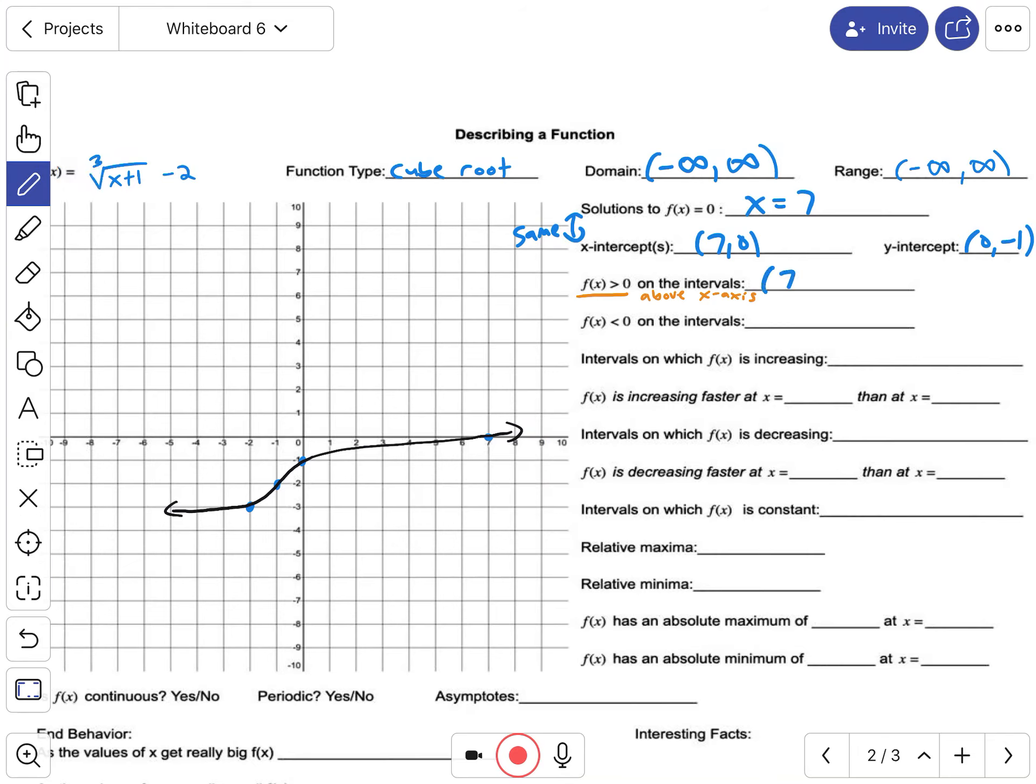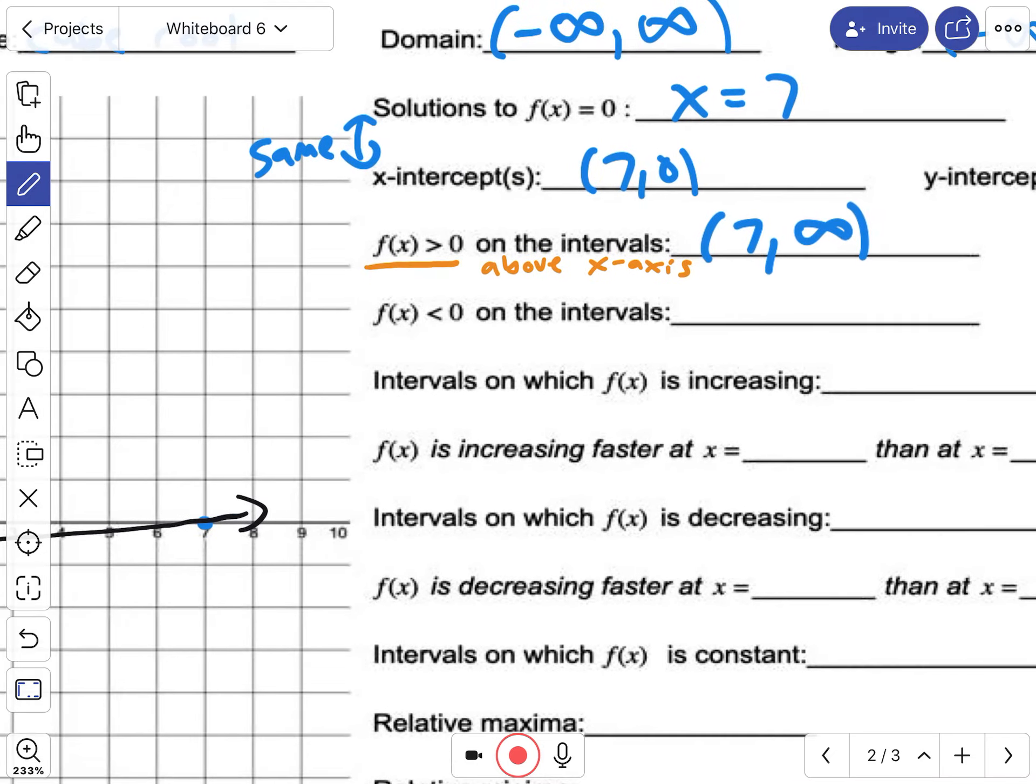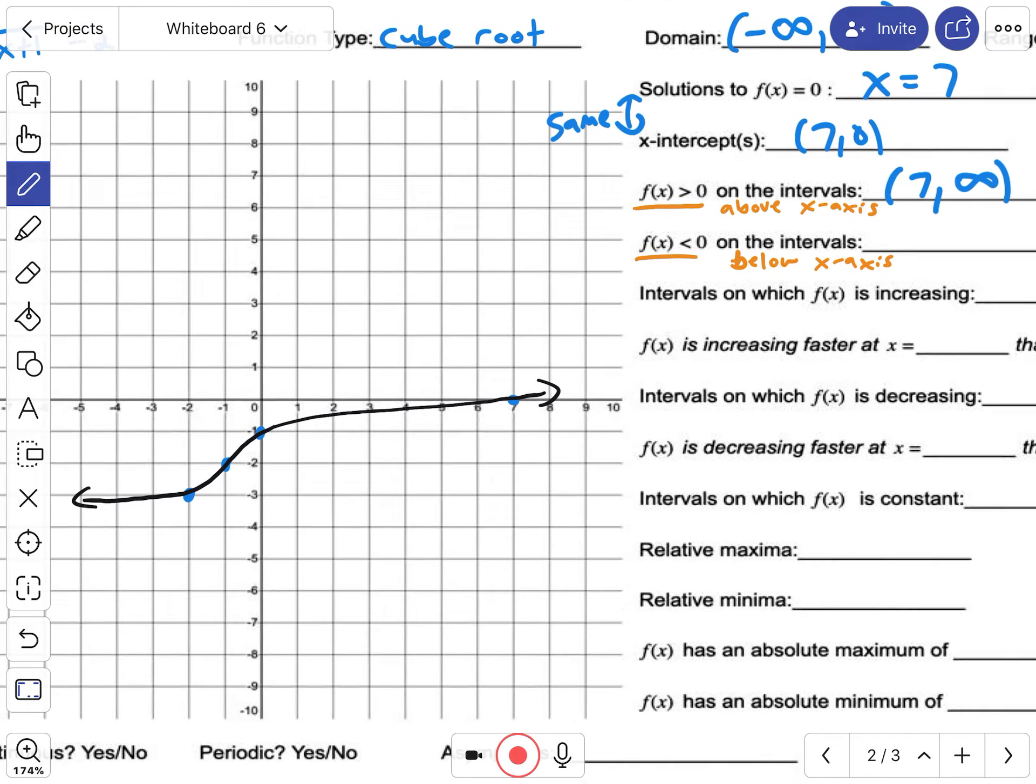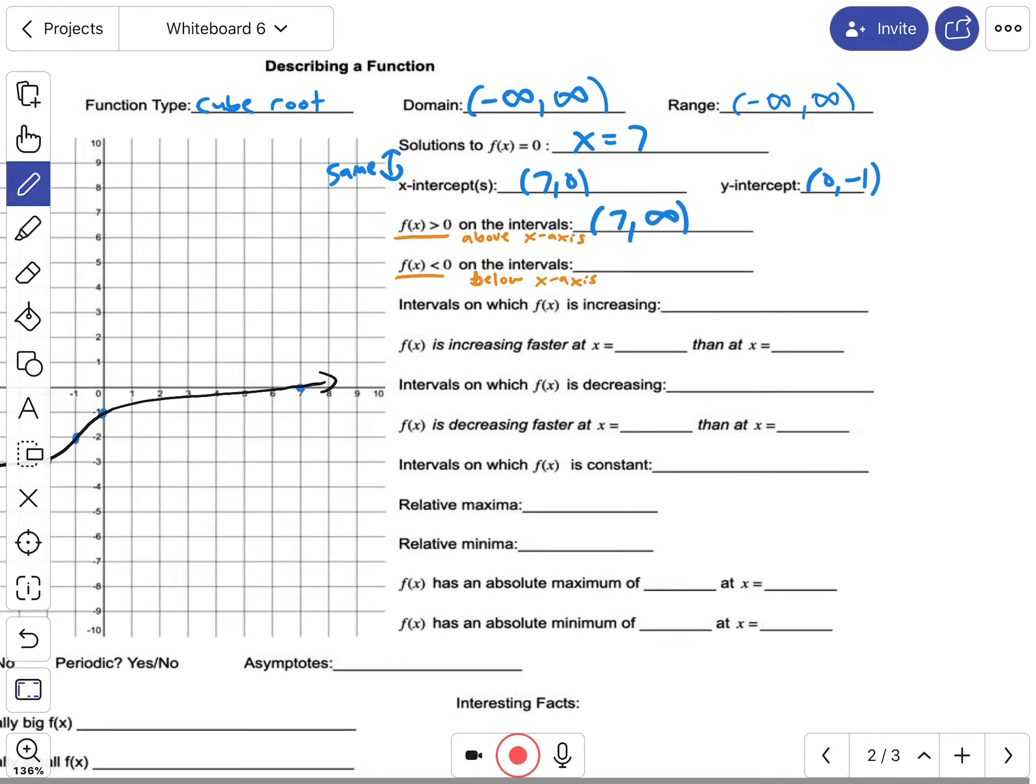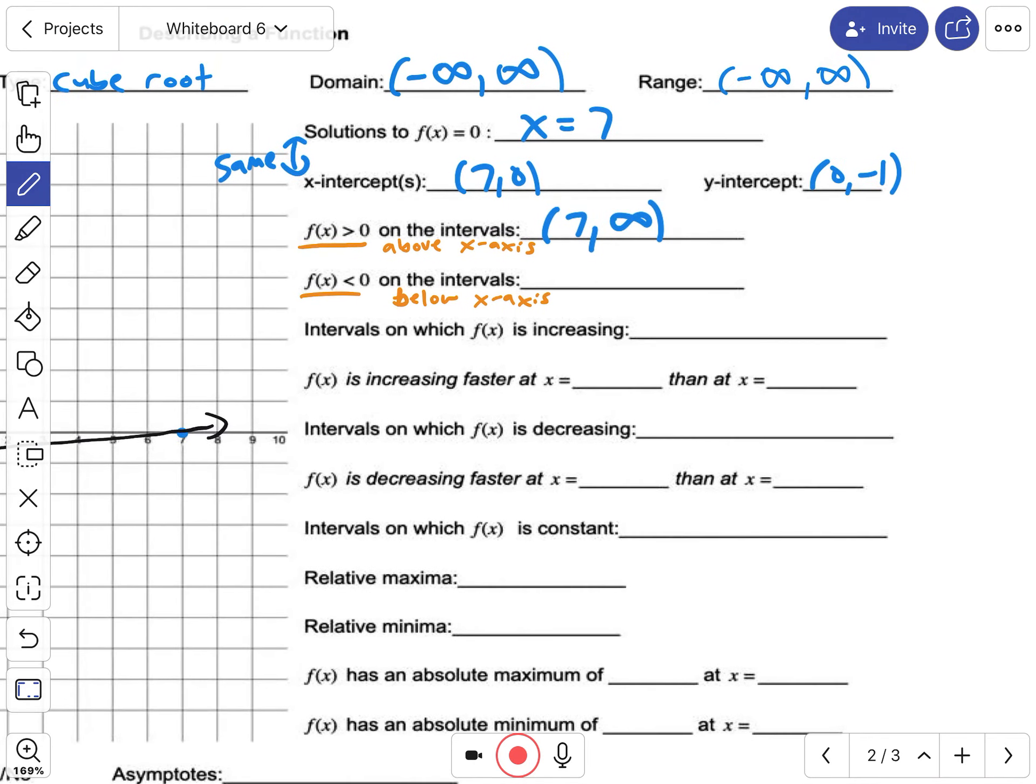This other one is below. And again, we're going to look at the x values for where it's below. So left of 7 to infinity is where this graph is below the x-axis.